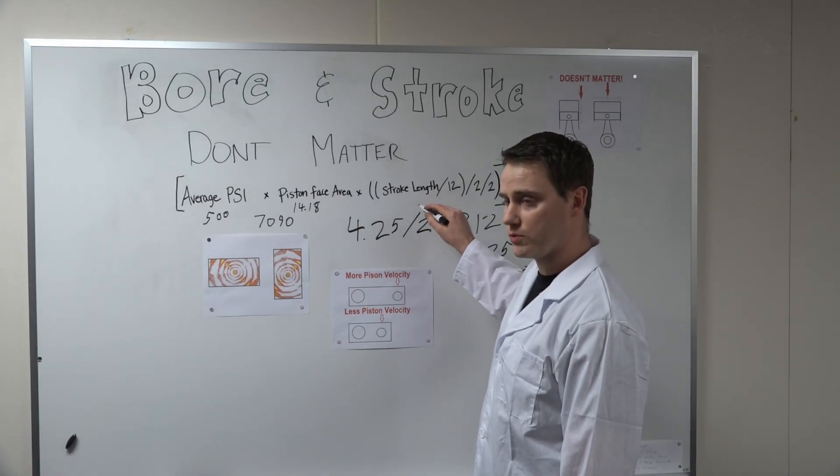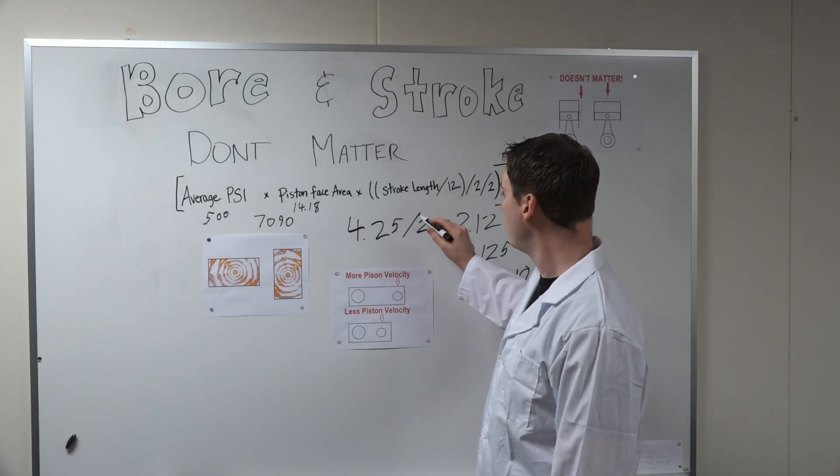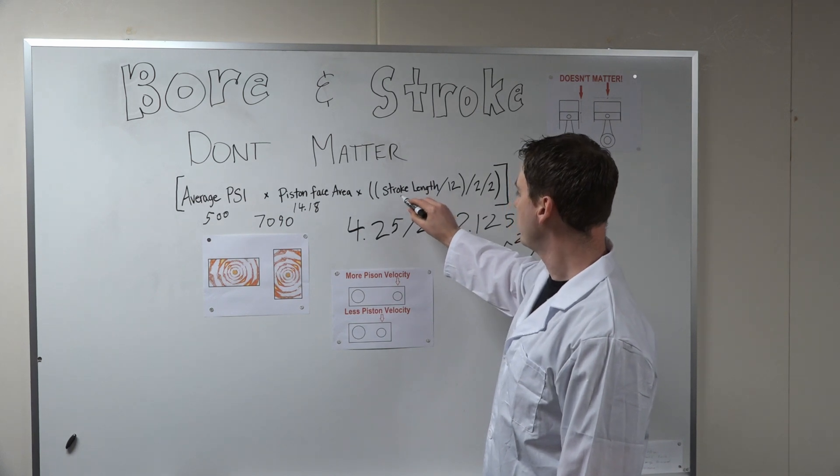Now we need to multiply that total pressure by our effective stroke length. Since we're using a 427 big block Chevy as an example, we'll take our stroke length, which is 3.76.